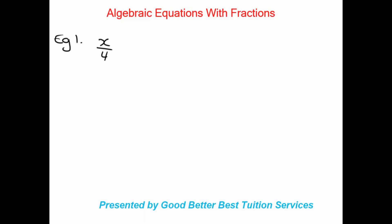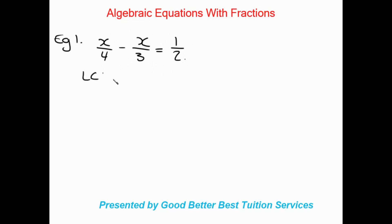The first example given to us is x over 4 minus x over 3 is equal to a half. Looking at this now, we need to first find our LCM — our lowest common multiple — between 4, 3, and 2. We can see that the lowest common multiple here is going to be 12.